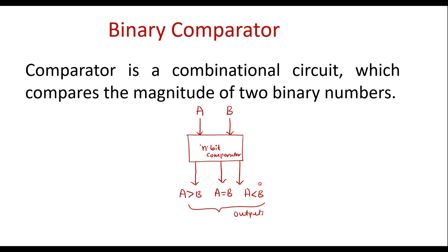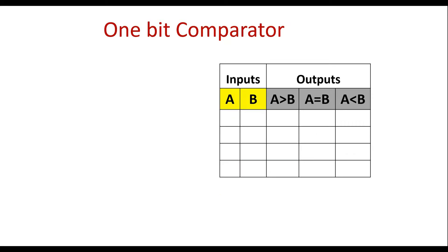Now let us see how to implement a one-bit comparator. In a one-bit comparator, we assume a and b are the numbers, where a is having one bit and b is having one bit.